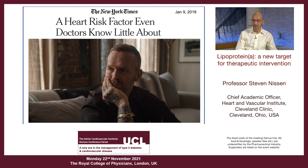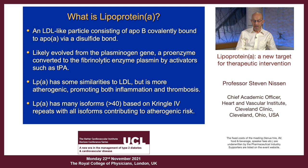So what exactly is lipoprotein A? It's an LDL-like particle consisting of ApoB covalently bonded to ApoA. ApoA has these kringle domains via disulfide bond. We think it likely evolved from the plasminogen gene, the proenzyme converted to the fibrinolytic enzyme plasmin by activators such as TPA. LPA has some similarities to LDL, but it is more atherogenic, promoting both inflammation and thrombosis.